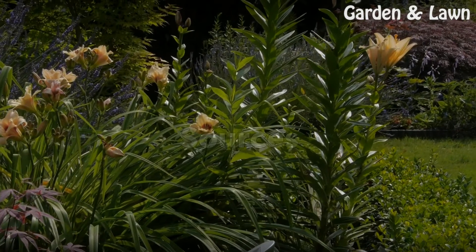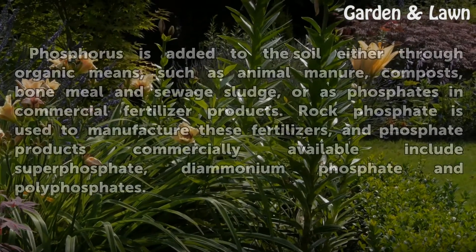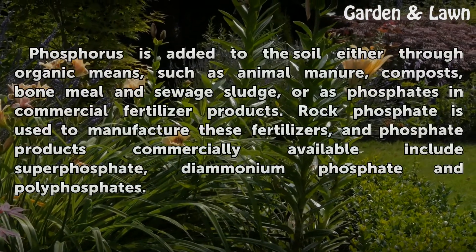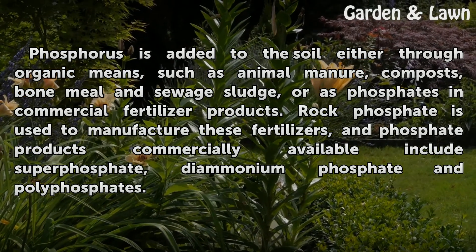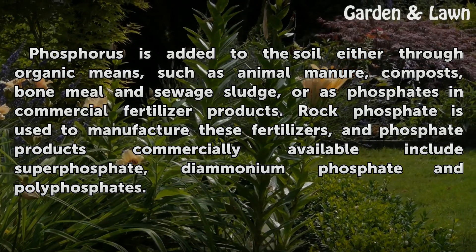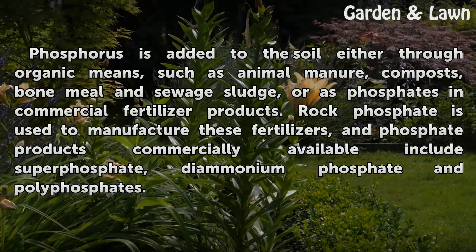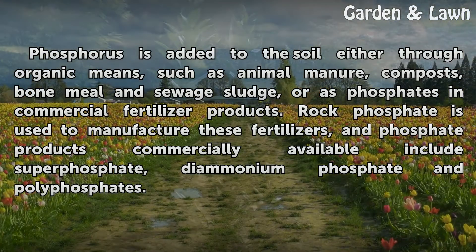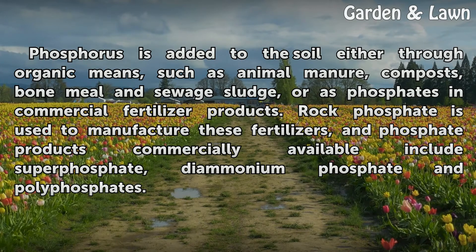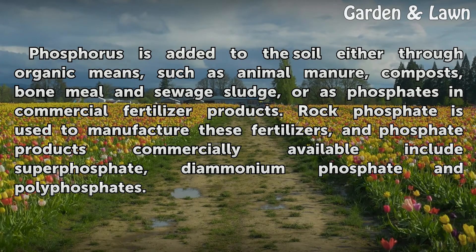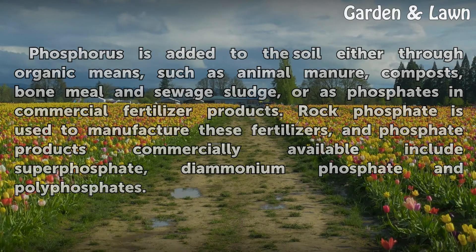Sources. Phosphorus is added to the soil either through organic means, such as animal manure, composts, bone meal and sewage sludge, or as phosphates in commercial fertilizer products. Rock phosphate is used to manufacture these fertilizers, and phosphate products commercially available include superphosphate, diammonium phosphate and polyphosphates.